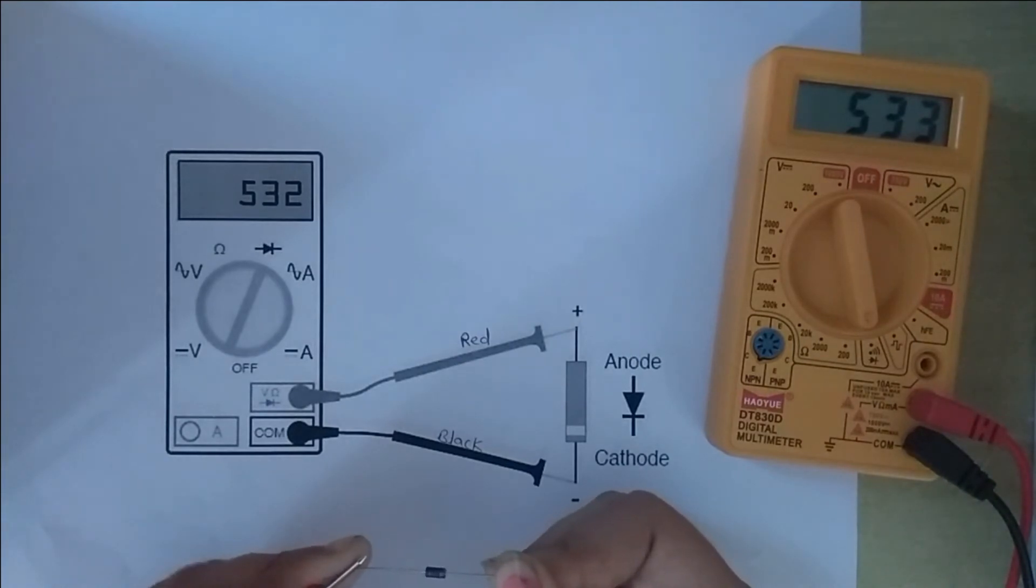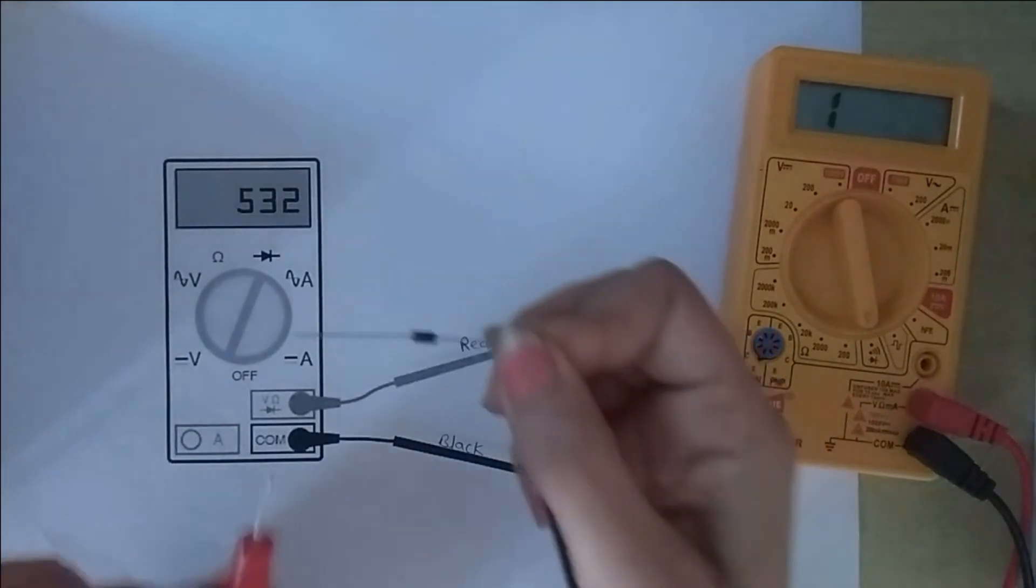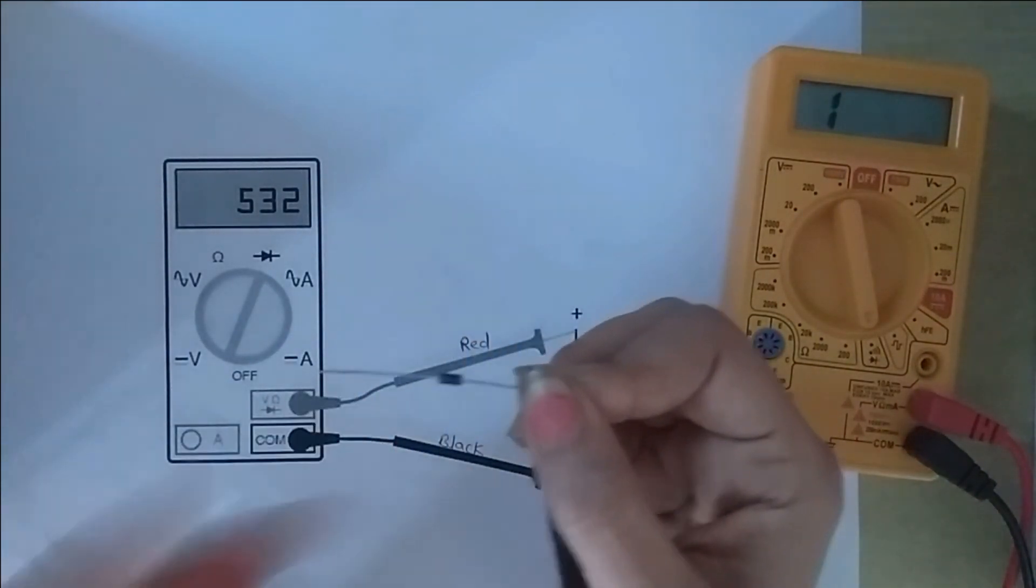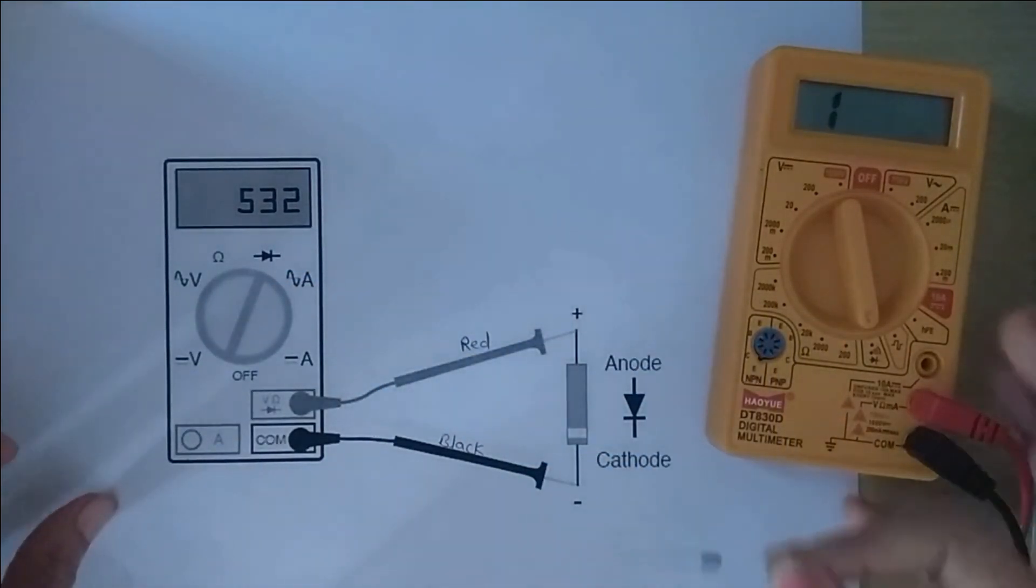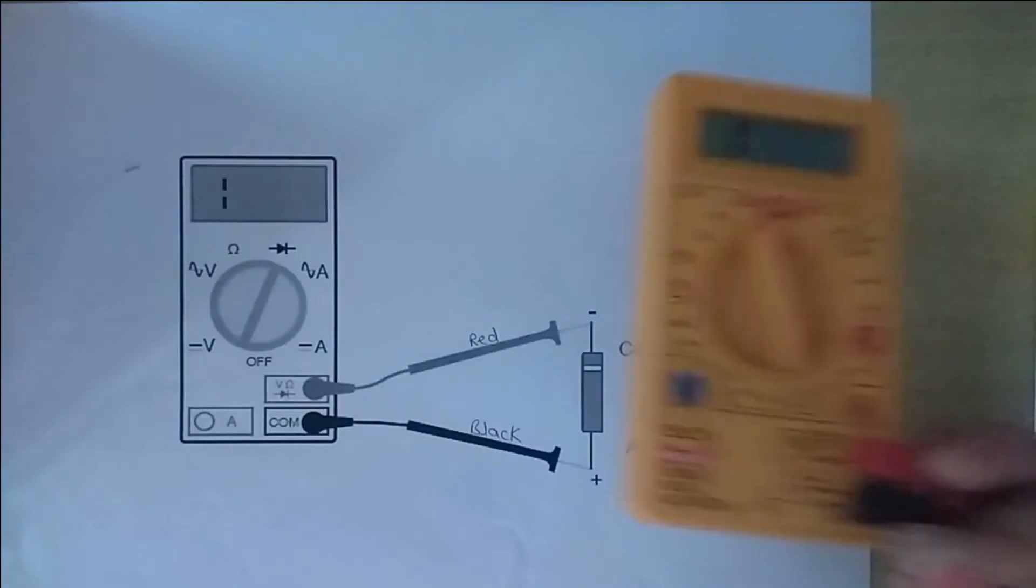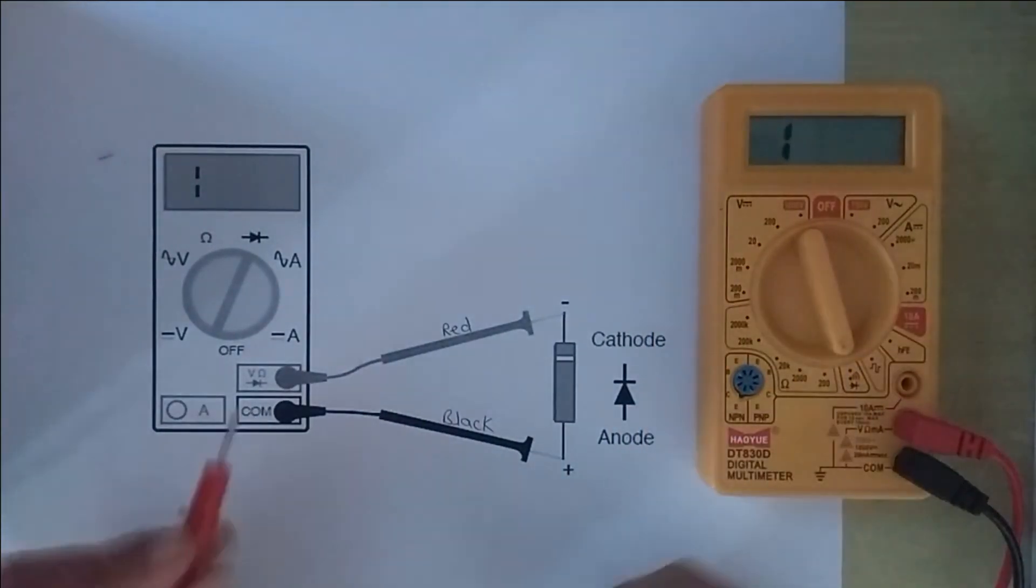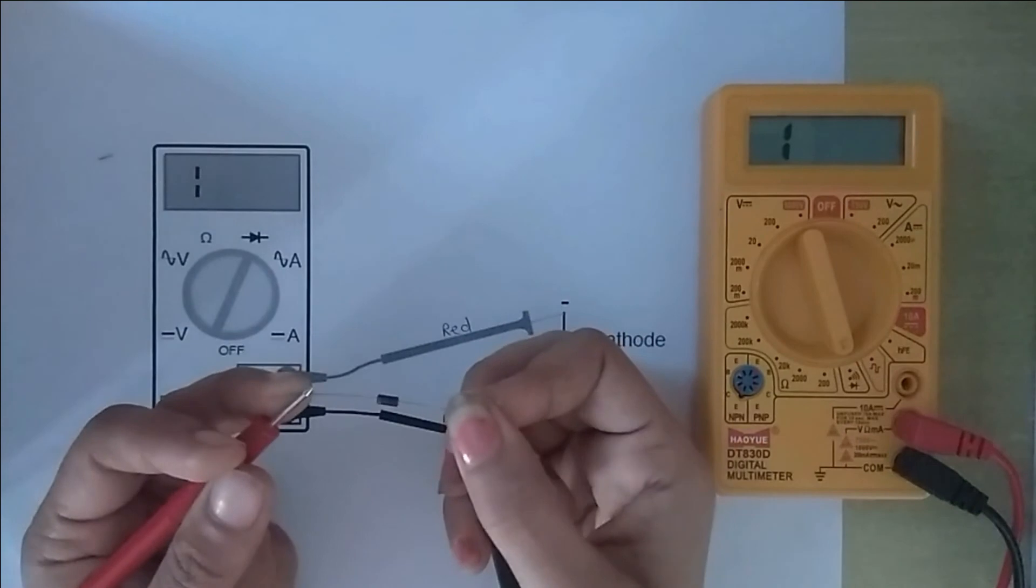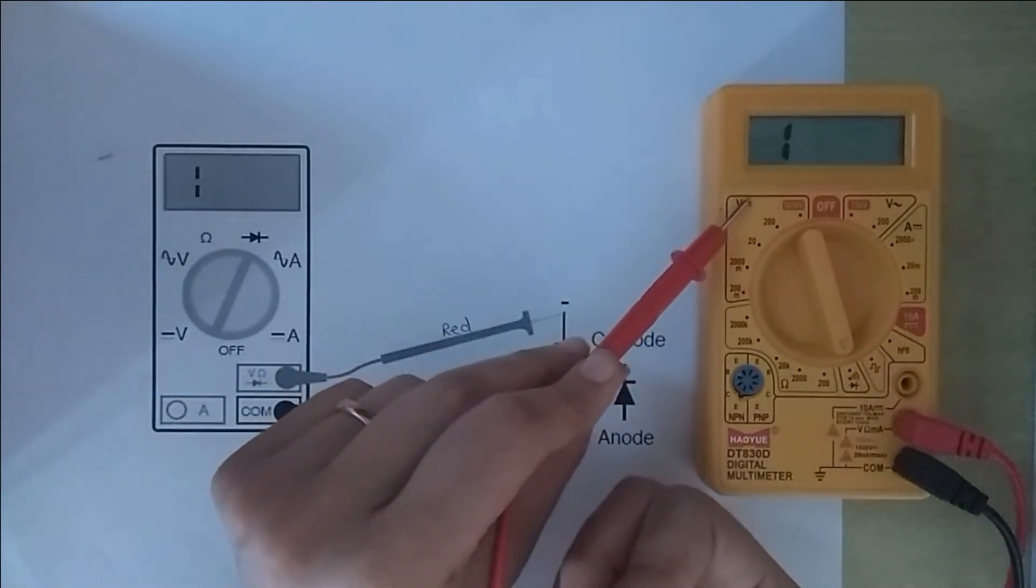In reverse condition, when the black probe is connected to the anode and the red probe is connected to the cathode, the diode is in reverse bias condition like shown in the diagram. In this condition, the diode doesn't conduct and the meter shows a high range.